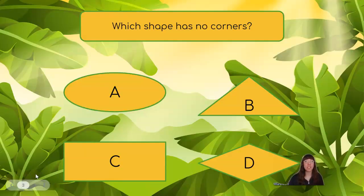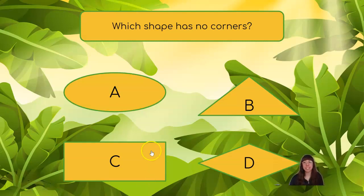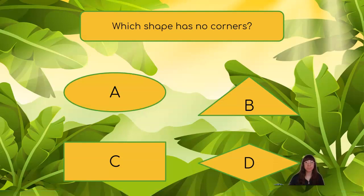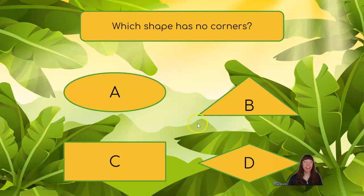Which shape has no corners? Hmm. We have A, B, C, and D. Which one does not have any corners? Very good! Shape A! This is an oval and an oval does not have any pointy corners.